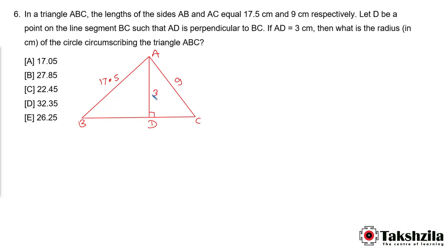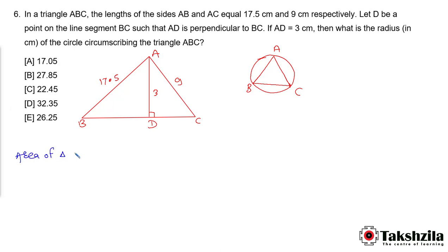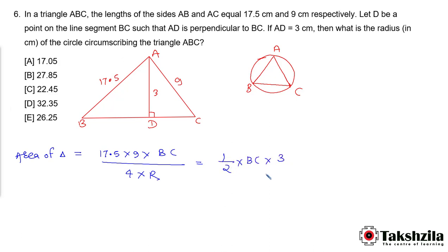What is the radius of the circle circumscribing triangle ABC? We need to find the circumradius. To find the circumradius we use the formula: Area = (product of all three sides) divided by (4 × circumradius). You can also find the area using half × base BC × height AD, which is 3. If you see, BC cancels out on both sides.